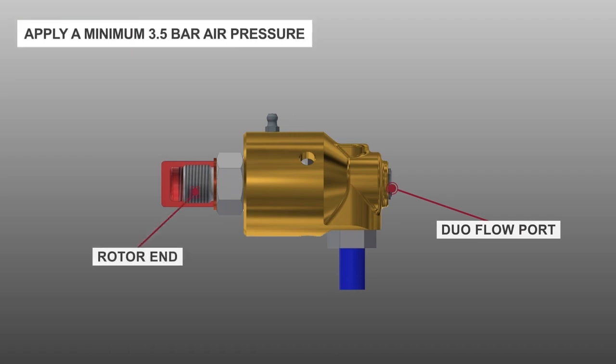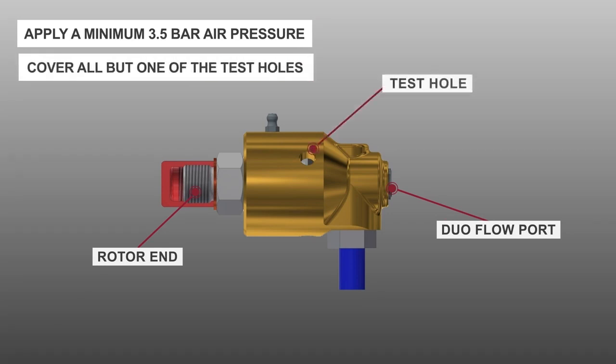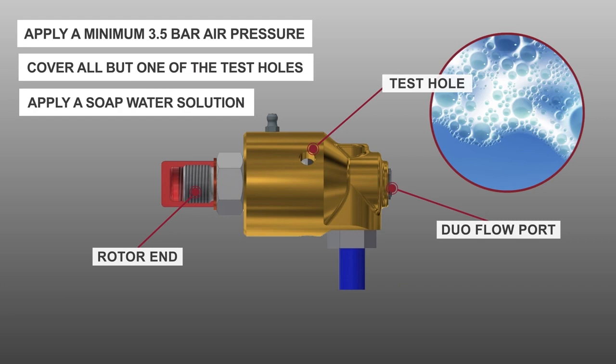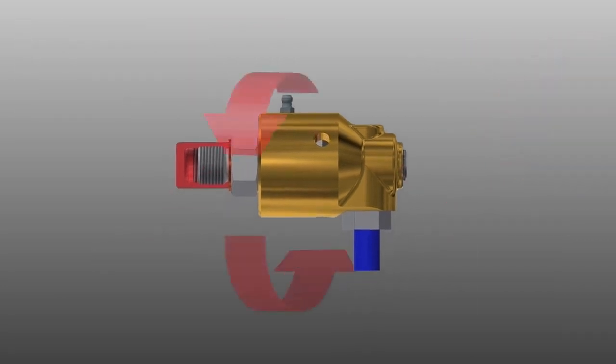Apply a minimum 3.5 bar air pressure. Cover all but one of the test holes and apply a soap water solution or bubble soap over the open test hole. Rotate the union by hand. If no soap bubble rises, the union passes the test.